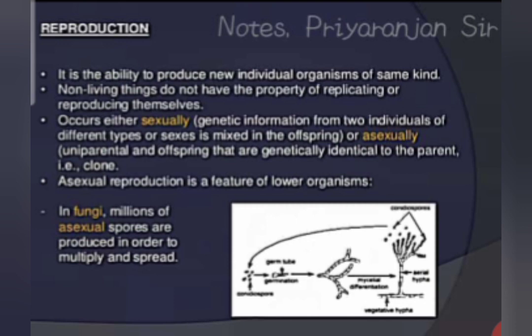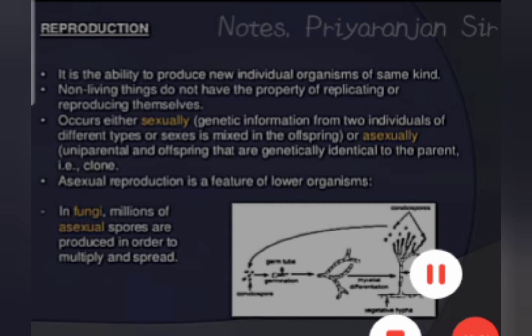Reproduction is not a defining property of living organisms, because some living organisms are unable to reproduce — they are sterile. For example, some humans are sterile; they cannot produce gametes and therefore cannot produce offspring, but they are still living. Another example is the sterile honey bee.